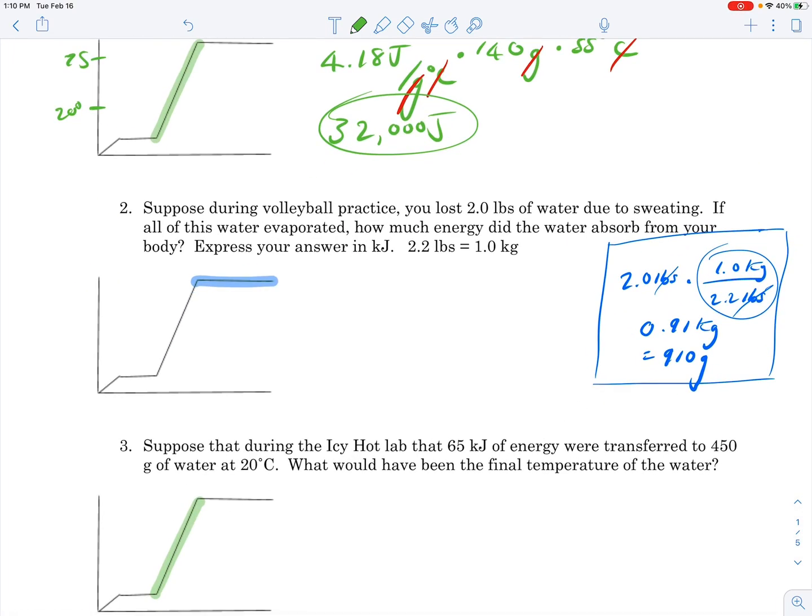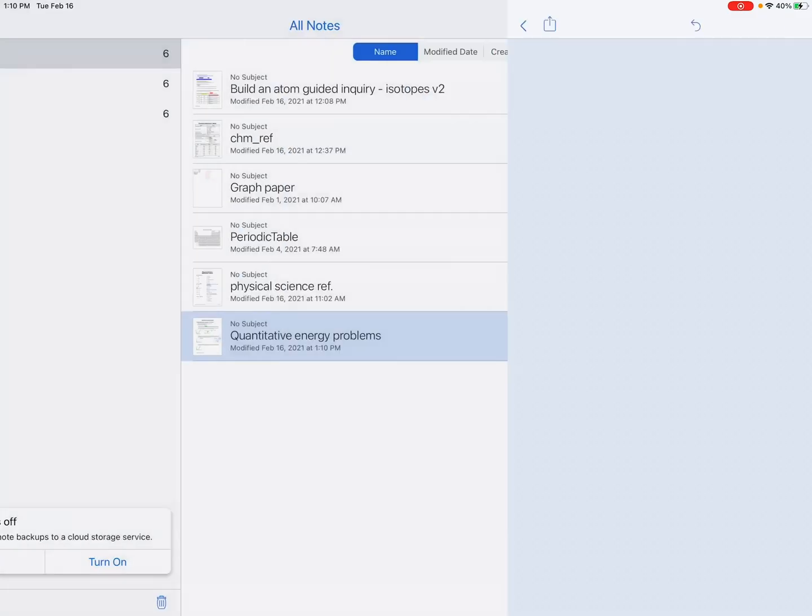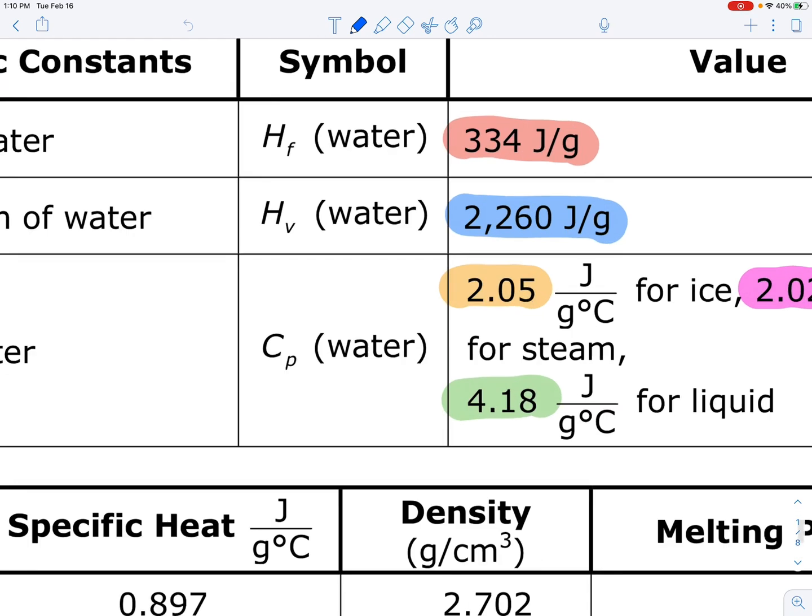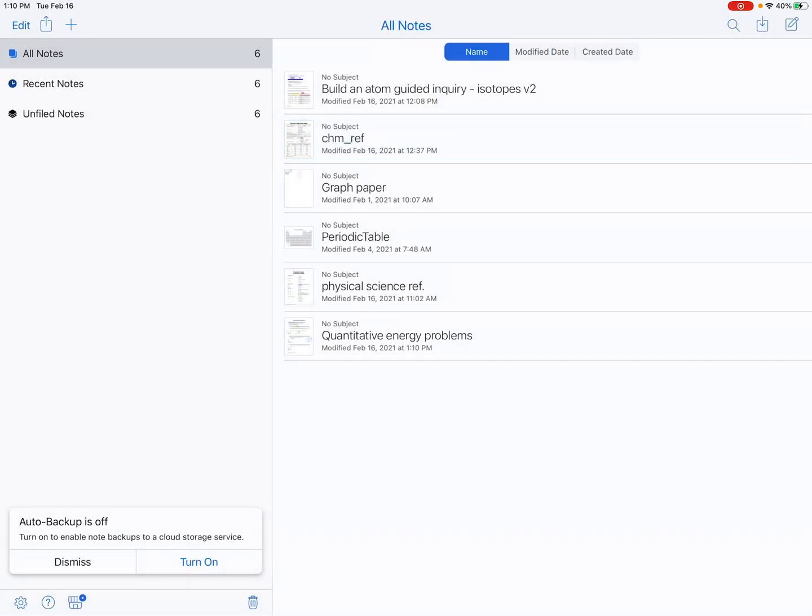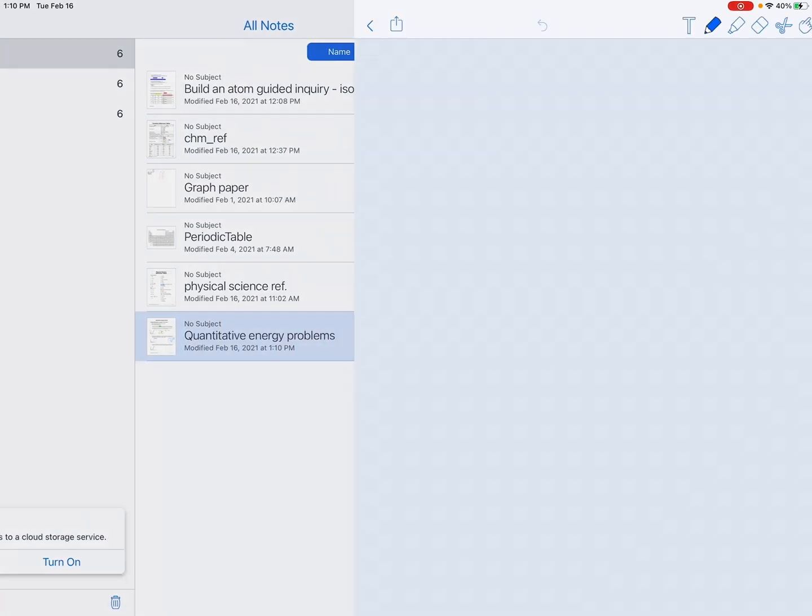The second question: Suppose during volleyball practice you lost two pounds of water due to sweating. If all of this water evaporated, how much energy did the water absorb from your body? Express your answer in kilojoules. We're dealing with the top part of the heating curve, the top plateau where vaporization occurs. That number is in your reference table: 2,260 joules over grams. We don't need to worry about a temperature change because we're on a plateau.